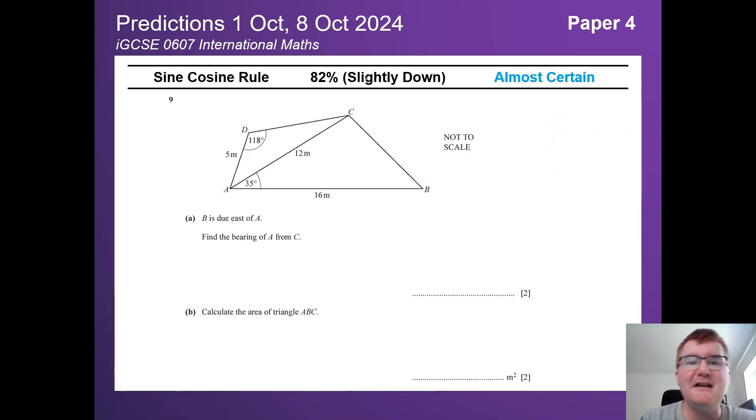Sine and cosine rule, slightly down here at 82%, often combined with bearings. I've got a great video on this, check it out above. This is very typical here. Notice bearings sneaking into the question, but also using all that knowledge about sine, cosine rule and the area of a triangle.